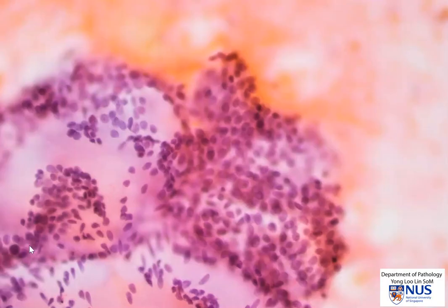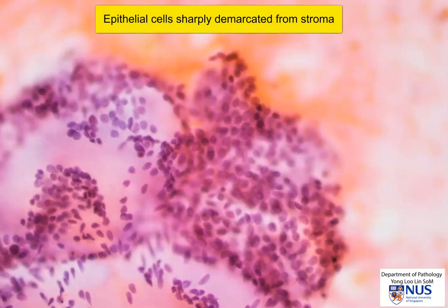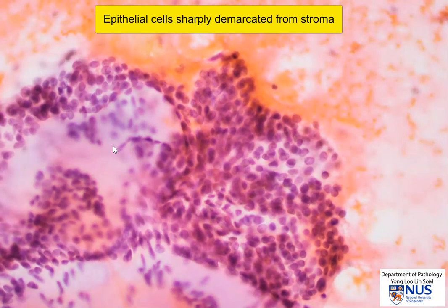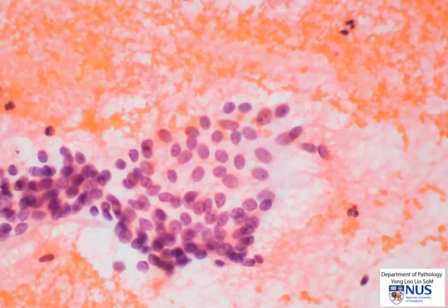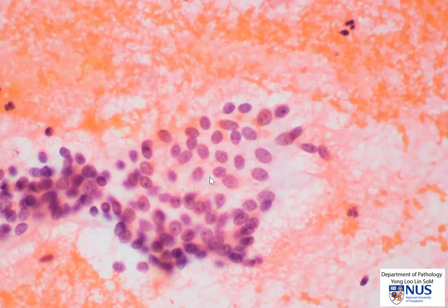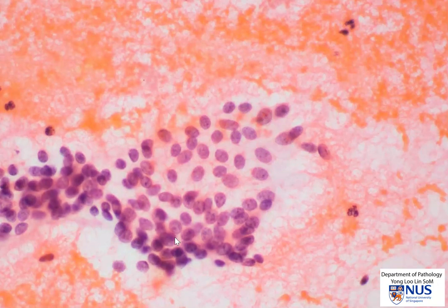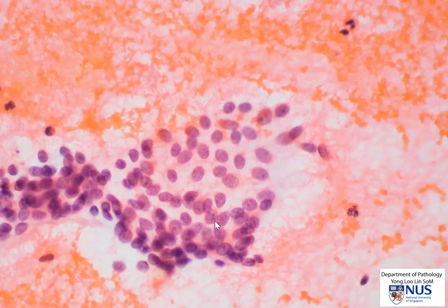Here again, we see the interplay between the epithelial cells or myoepithelial cells and the stroma. And here is a high magnification view of the epithelial cells. Some of them have got a small amount of very delicate pale cytoplasm. And if you look carefully, a few of them have small nucleoli, but other than that, they look fairly bland.